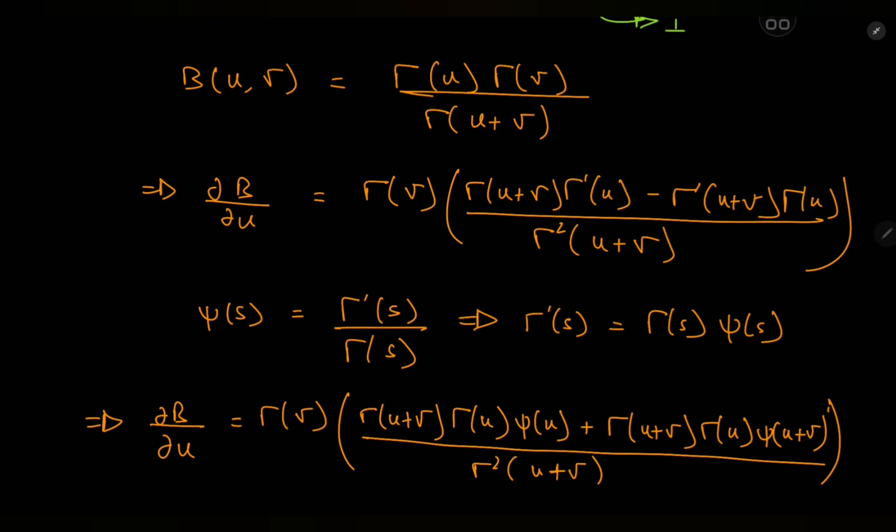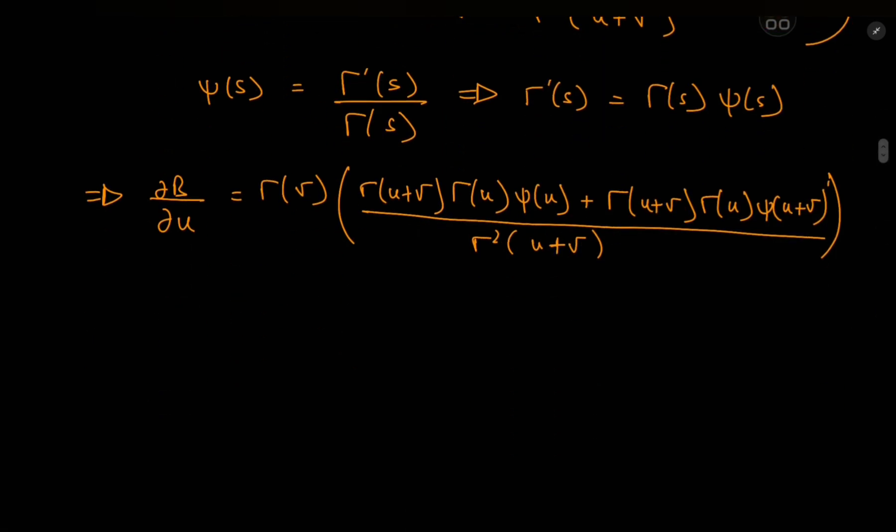And now we can just take a bunch of terms, we can factor out a bunch of terms. We can factor out a nice gamma u term to go with this gamma v term. We're dividing by gamma squared u plus v, but we can also factor out a gamma u plus v term anyway, so one of them gets cancelled out quite nicely, quite conveniently indeed. And we're left with digamma u. Oh wait, there was a minus sign over here, terribly sorry about that. Minus digamma u plus v.